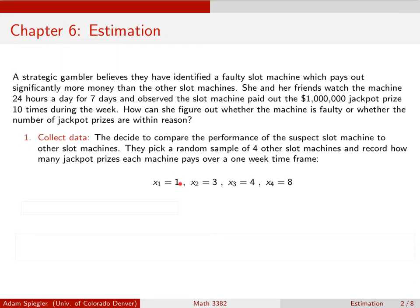Slot machine one only paid out one jackpot. Slot machine two paid out three jackpots. Slot machine three had four jackpots, and slot machine four had a total of eight jackpots. So does this slot machine that we observed that paid out 10 jackpots—does that seem about right?